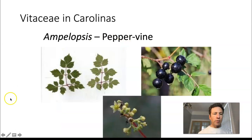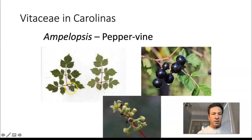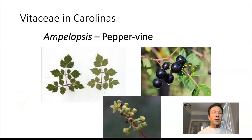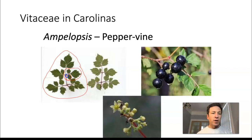Another group within Vitaceae is Ampelopsis, or pepper vines. These are somewhat less common but still fairly prevalent. The leaves are bipinnately compound — one leaf is split into leaflets, which are then further split into sub-leaflets. The fruit is again a grape-like berry.